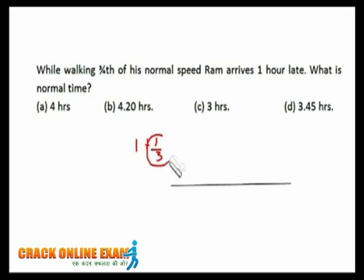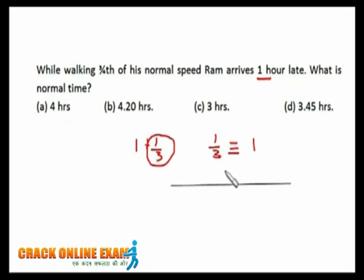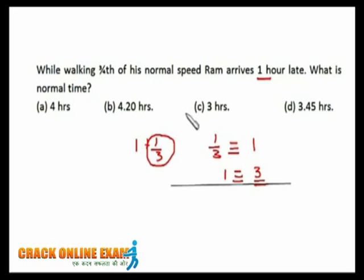He's taking one-third part extra from normal, and in this problem he's getting late by one hour. So one-third is equivalent to one hour, which means one — the normal time — is equivalent to three hours. He regularly takes three hours to cover that distance, and on that day at three-fourths speed, he takes four hours — one hour more.